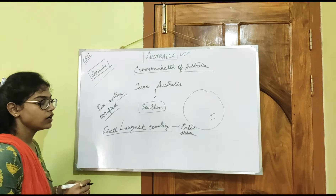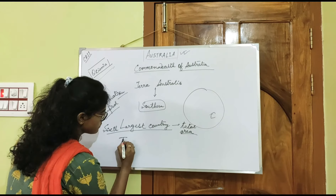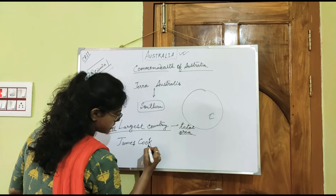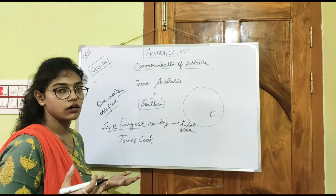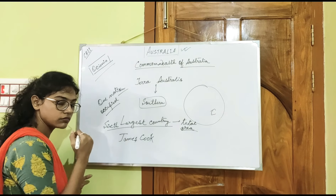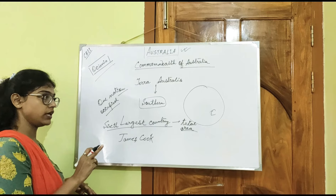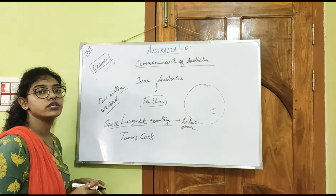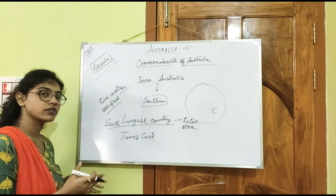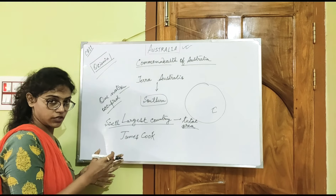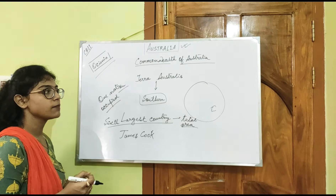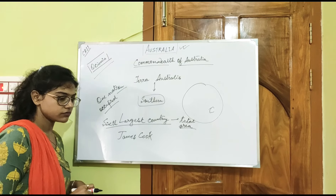Next — who found Australia? That is James Cook. He is a Navy captain who explored Australia. Firstly, he found the place which was named Newfoundland. After that, because he was British, the place became a British colony. After that it belonged to some Australian tribes.